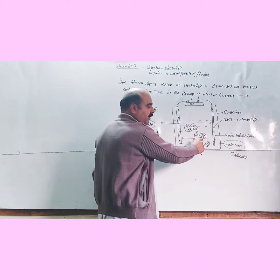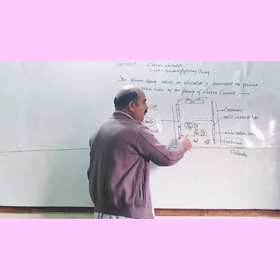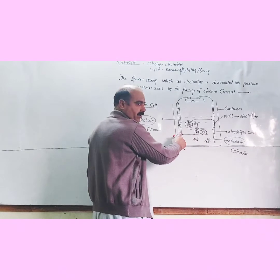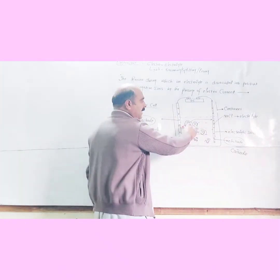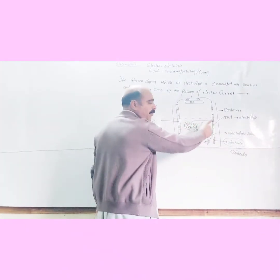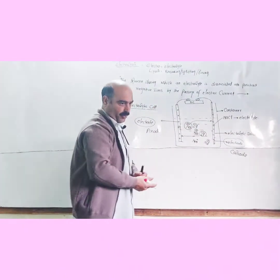When current is supplied, negative ions (anions) move towards the anode, while positive ions (cations) move towards the cathode.